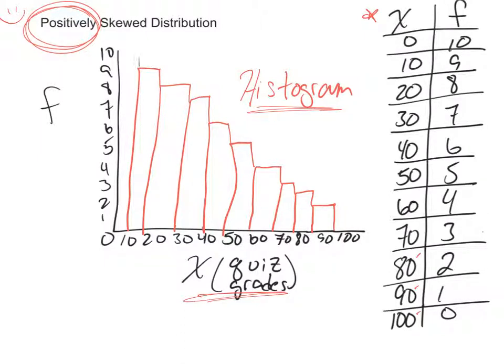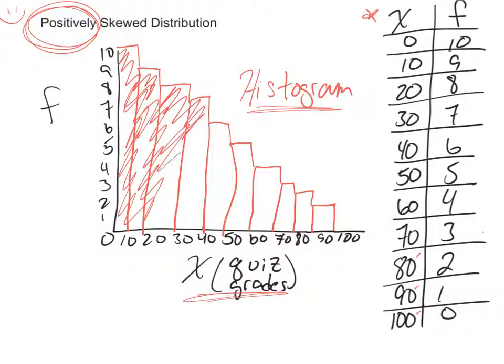And then ten people got zeros. This would be kind of colored in, indicating that we're dealing with a histogram with continuous variables.